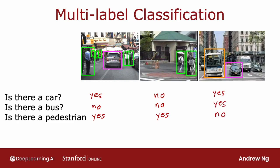So these are examples of multi-label classification problems because associated with a single input image X are three different labels corresponding to whether or not there are any cars, buses, or pedestrians in the image.